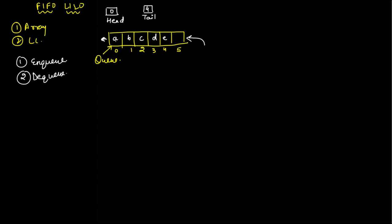Head is pointing to zero and tail is pointing to four. If I perform a dequeue operation, A will be deleted and returned, so head will now point to location one. If I perform one more dequeue, B will be deleted and head moves to the next location. Then if I perform an enqueue and insert F, tail will point to location five.